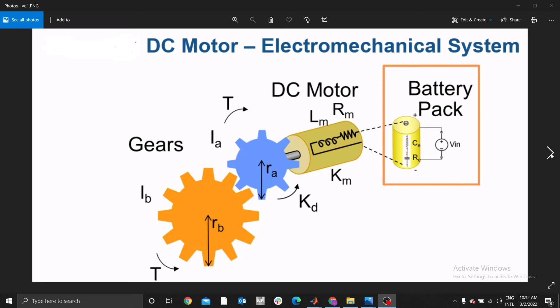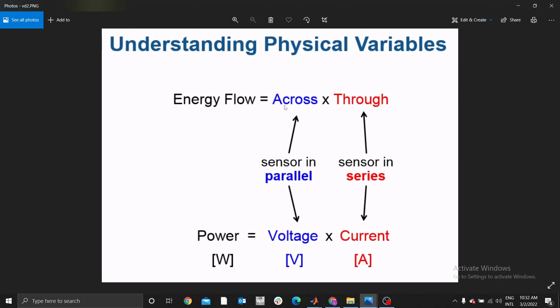Okay, then you have to understand variables. For you to understand how to model EV systems or how to use Simulink, you have to understand variables. You have to know that energy flow goes across times through. For example, for you to get power: power is V times current, voltage times current. This means for you to measure voltage, the sensor for the voltage has to be connected parallel to the system.